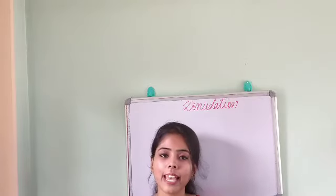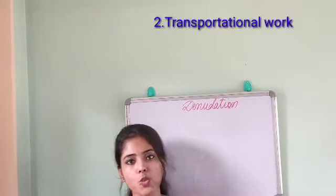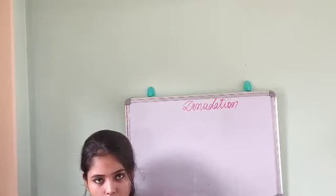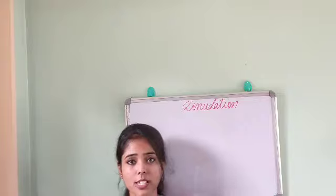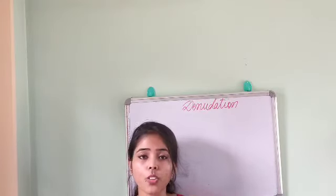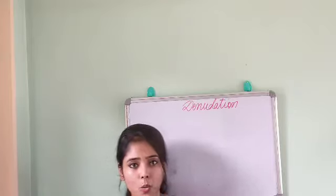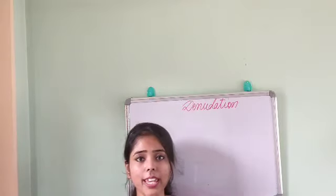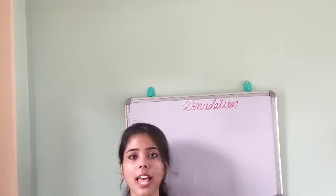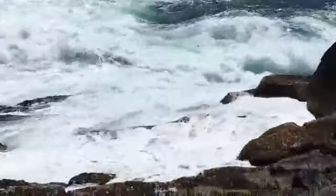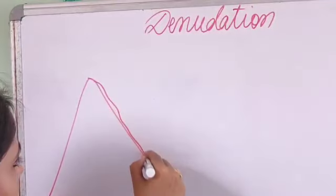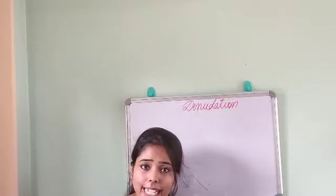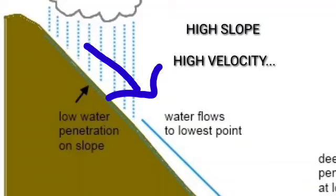Now I will move towards the functions of rivers, which are: number one, erosional work; number two, transportational work; and number three, depositional work. In this class I will discuss the erosional work of rivers. When the river is flowing in the upper course through the mountainous part, it has a large amount of velocity — meaning its speed is very high — because the river is flowing through a steep slope.